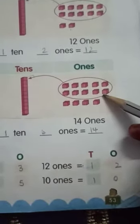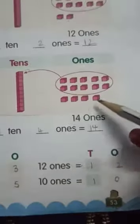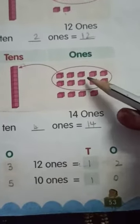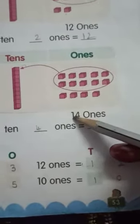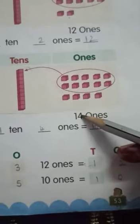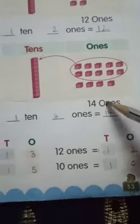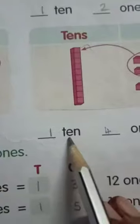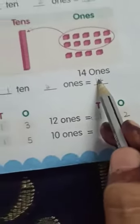Now, here we have, all together 14 ones. This, 1 ten and 4 ones. So, all together 14 ones. This can be written as 1 ten and 4 ones.